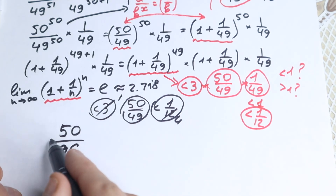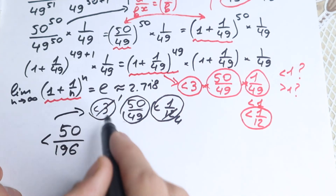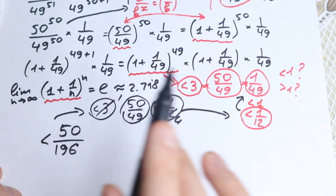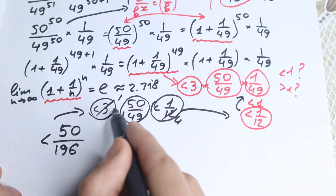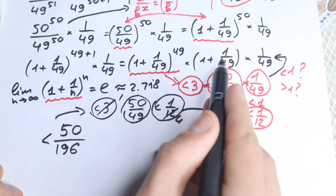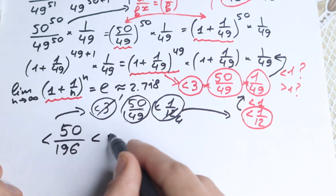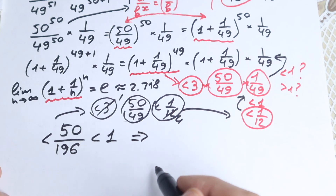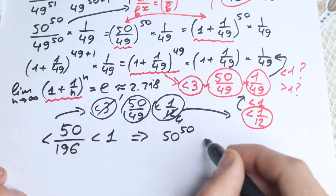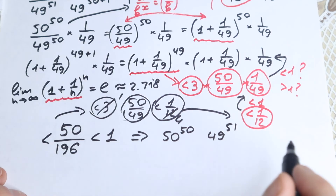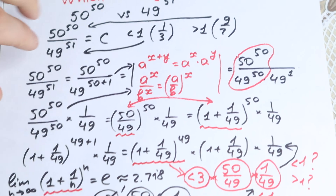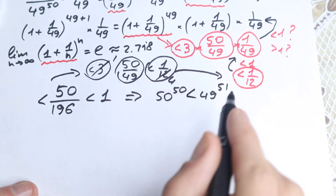So this expression gives 50 over 196. Now take a look closely: this expression is greater than our original product, and step by step we showed that the original product is less than this, which is itself less than 1. So our answer — 50 to the power 50 divided by 49 to the power 51 — is less than 1, which means our denominator is greater. Therefore, 49 to the power 51 is greater than 50 to the power 50.